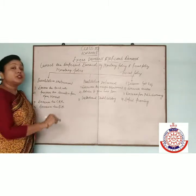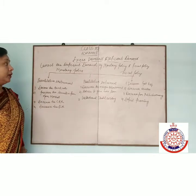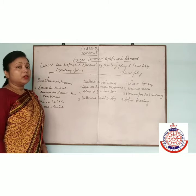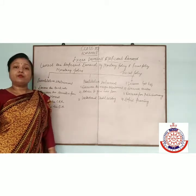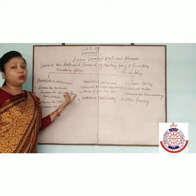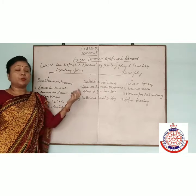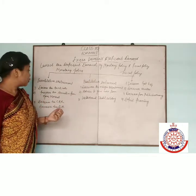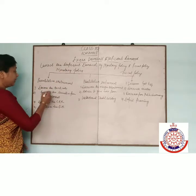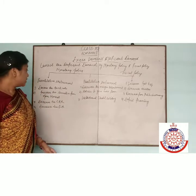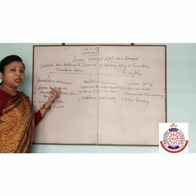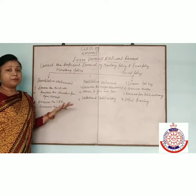Next topic is how we can correct the deficit demand using monetary policy and fiscal policy. Monetary policy is made by the RBI and fiscal policy is made by the government. In monetary policy, we are taking two types of instruments: qualitative and quantitative. In case of deficit demand, first is to decrease the bank rate. RBI decreases the bank rate.